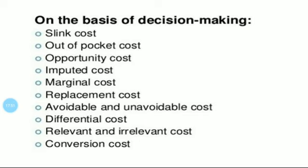Fourth, imputed cost. These are hypothetical costs or notional costs — computed for decision making purposes only. These costs are not actually incurred. These are expenses which an entrepreneur pays to himself, and are not recorded in the books. Examples: rent on owned building, salary of owner, interest on owned capital, etc.